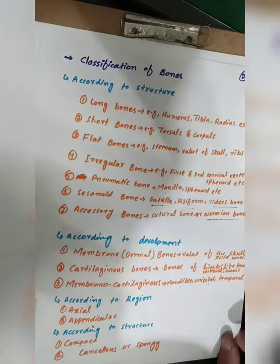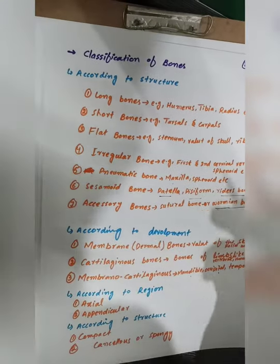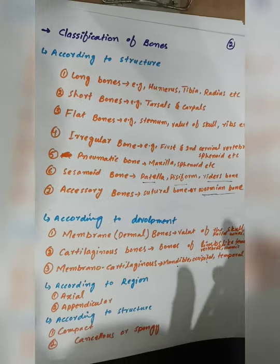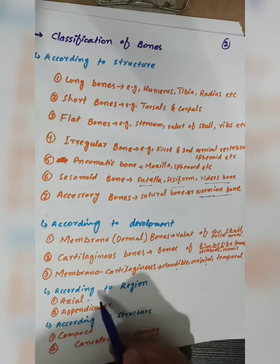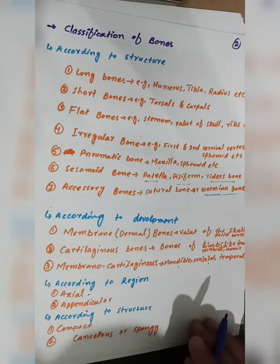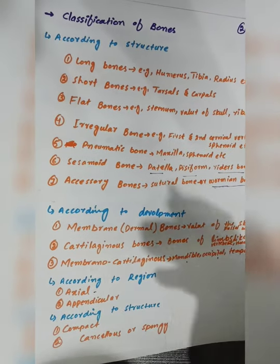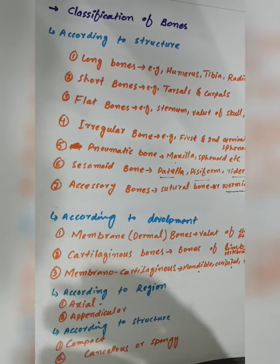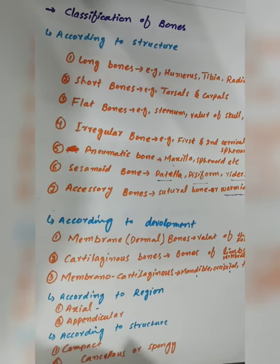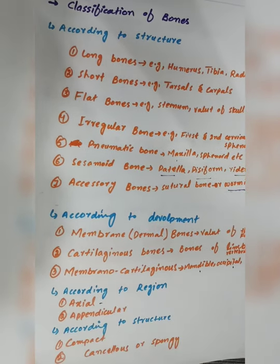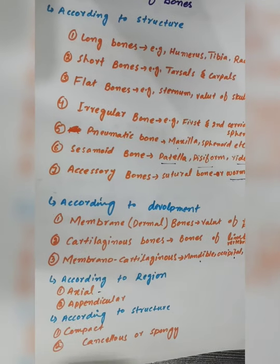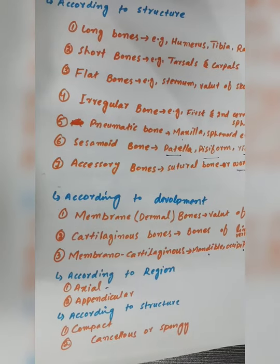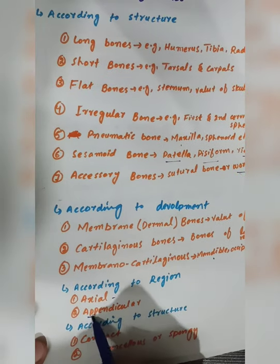According to regions, there are two types of bone: the axial skeleton and the appendicular skeleton. The axial skeleton is the center of the body and includes the skull, sternum, and ribs. The appendicular skeleton includes the upper limbs and lower limbs.